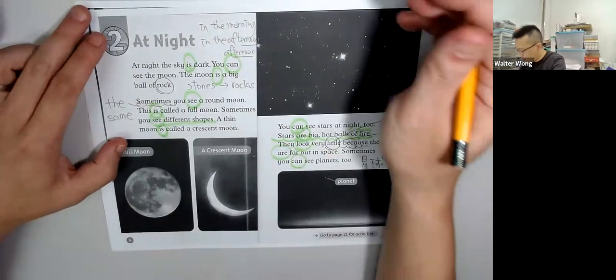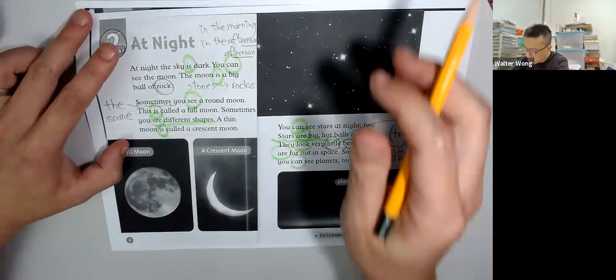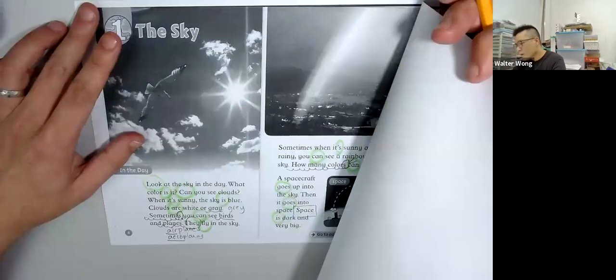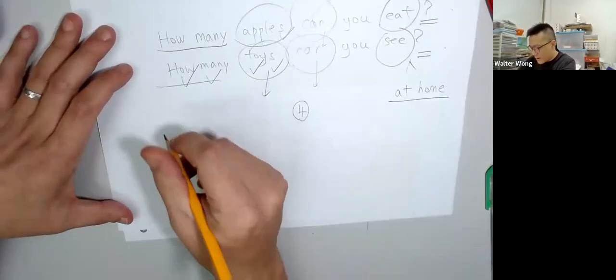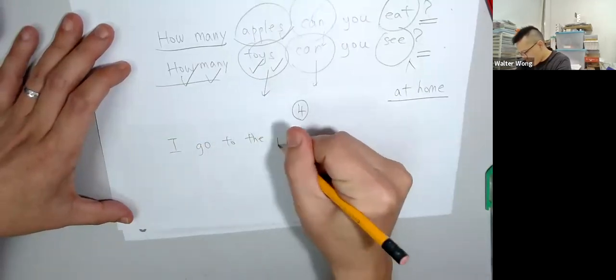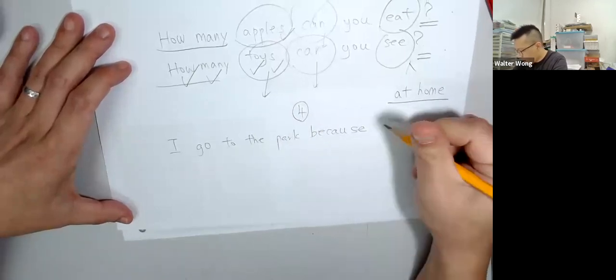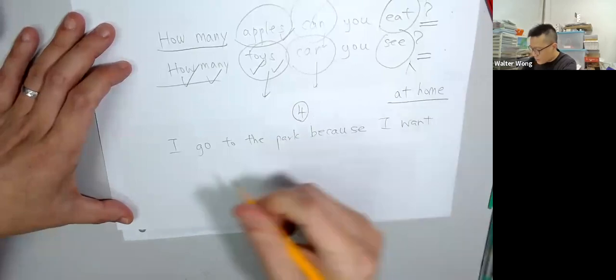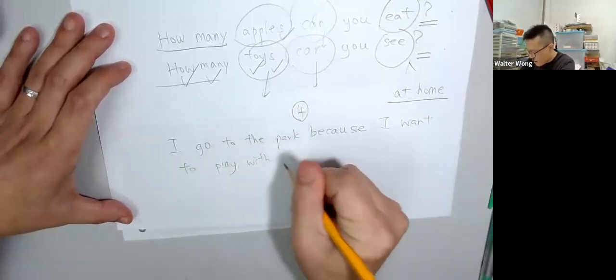重點在哪裡? The key point is because. 留意because在句子中間出現. I go to the park. Because I want to play with friends.